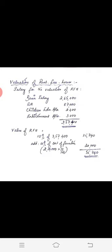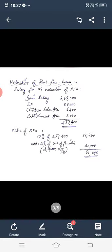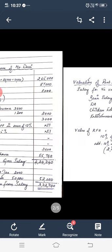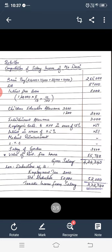Basic salary, DA, children's education allowance — how much of children's education allowance is taxable — and entertainment allowance total to Rs. 3,57,400. The rent-free house value is 10% of salary because the population is in a city over 25 lakhs, so 10% of salary is the rent-free house value. If we add furniture, we add 10% of cost. So it amounts to Rs. 55,740.